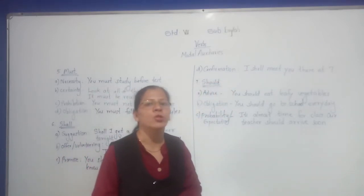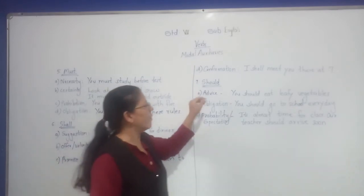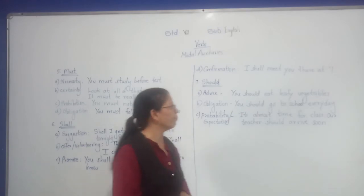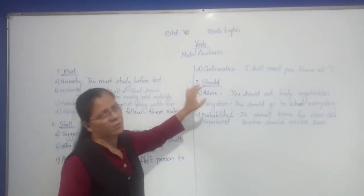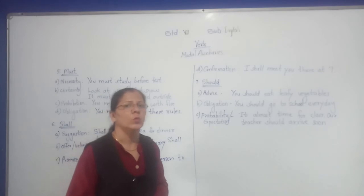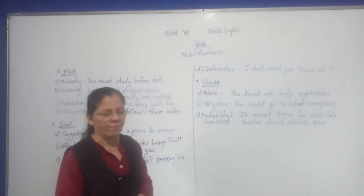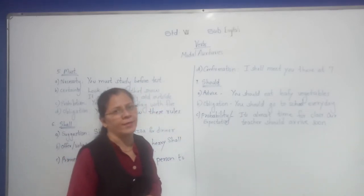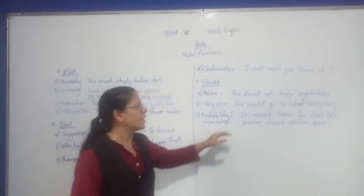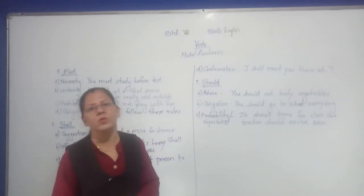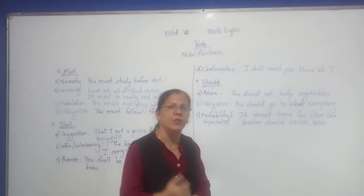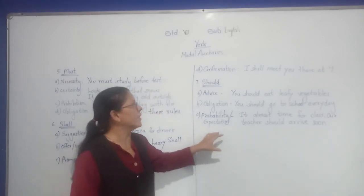The next modal verb is 'should'. Should is used for advice: 'You should eat leafy vegetables.' Should is also used for obligation: 'You should go to school every day' — it is obligatory. Next, should is used for probability or expectation — to say something is probable or expected: 'It's almost time for class — our teacher should arrive soon.' For probability and expectation, we use should.